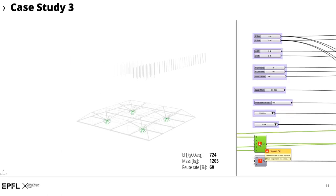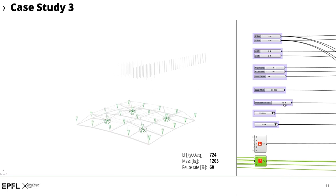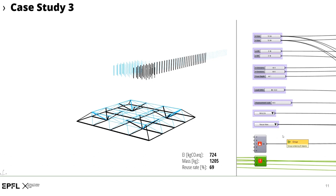In this example, we can see a spatial truss structure with the corresponding stock. In the first step, we can check how the structure deforms under load. At the same time, the plugin assigns stock elements to the structure for the given load case in almost real-time, so that we always get feedback on our design.